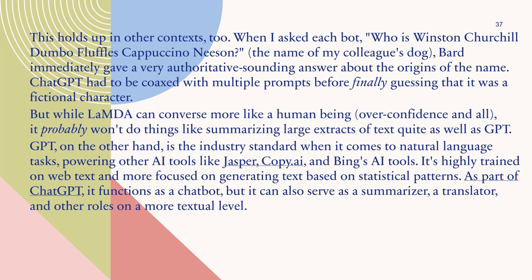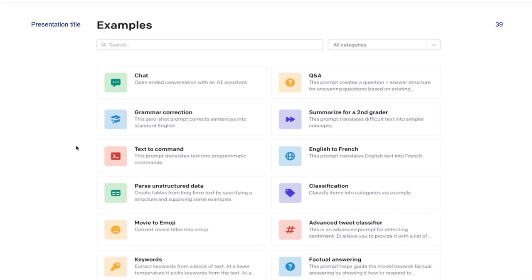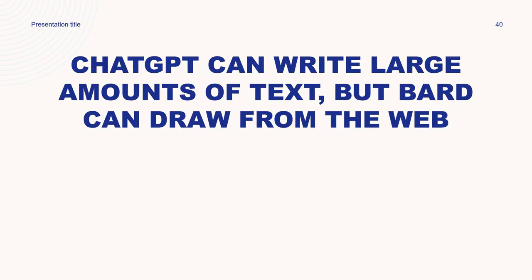LaMDA is trained to understand the intent behind user queries. To achieve this, Google's team grouped high-level concepts and topics into clusters based on hierarchy, as shown in these pictures. In a nutshell, LaMDA's responses are supposed to be ultra-authentic and mimic human speech in such a way it can't be told apart from a real human. It can also switch contexts when a user changes the subject, like you and I can.